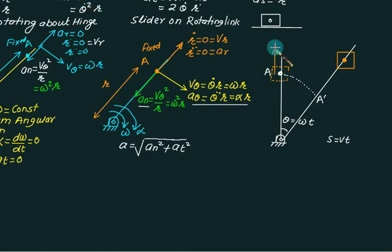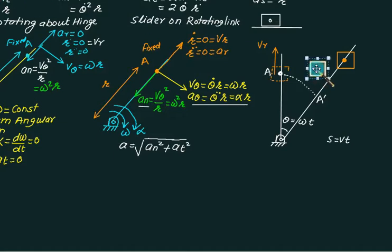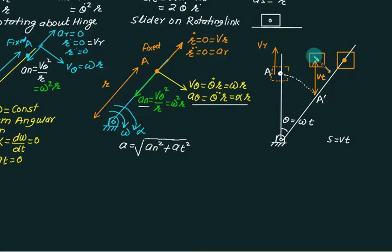In time dt, the slider will travel a distance equal to v times dt. The slider has to reach point A, but since it has an outward velocity, it will not reach point A and will move outward. The slider is mounted on the link, so it must remain on the link, causing a horizontal displacement. This horizontal displacement is due to the Coriolis component. Whenever we have a slider and a link with translatory motion, we always get the Coriolis component of acceleration.